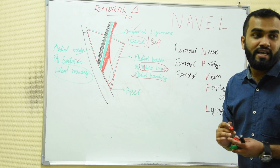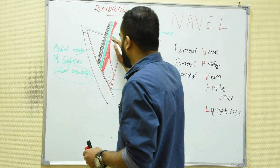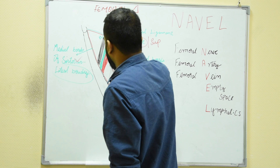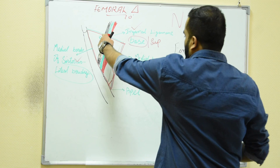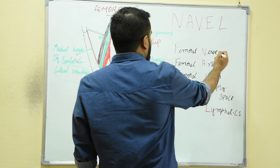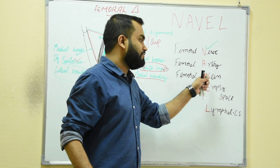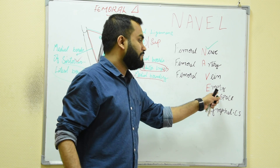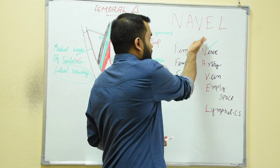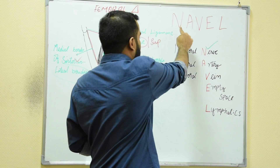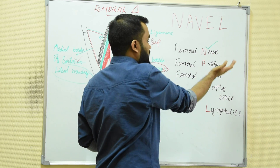The second thing they ask about is the contents. Using the mnemonic NAVEL: N is for femoral nerve, A for femoral artery, V for femoral vein, E for empty space, and L for lymphatics. So remember the order — nerve, artery, vein, empty space, and lymphatics.